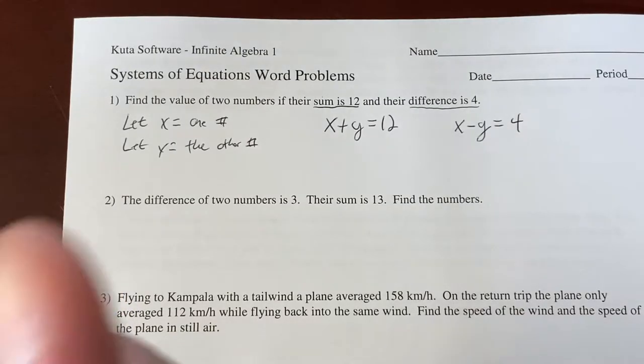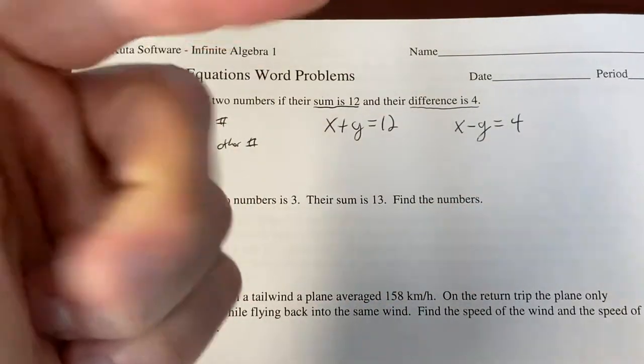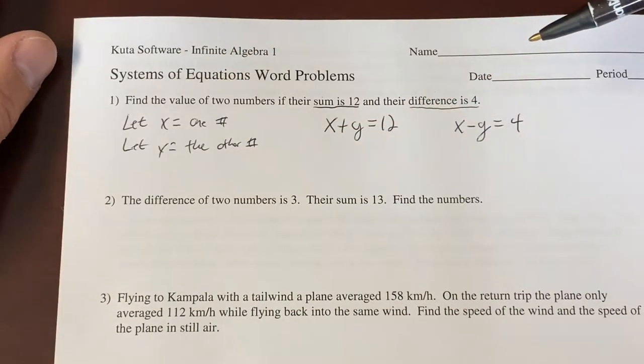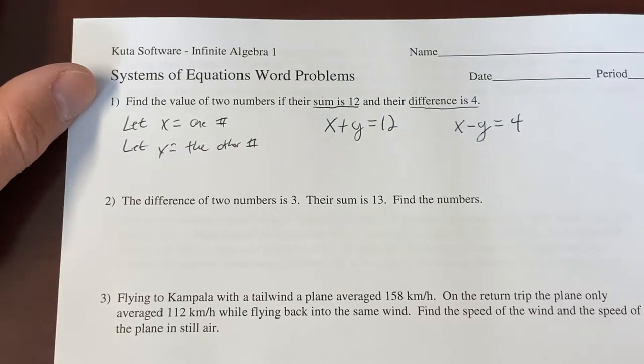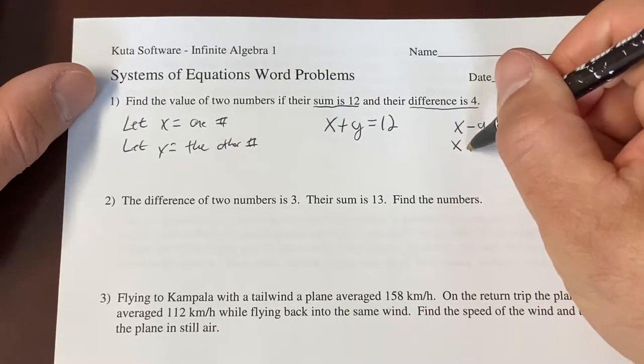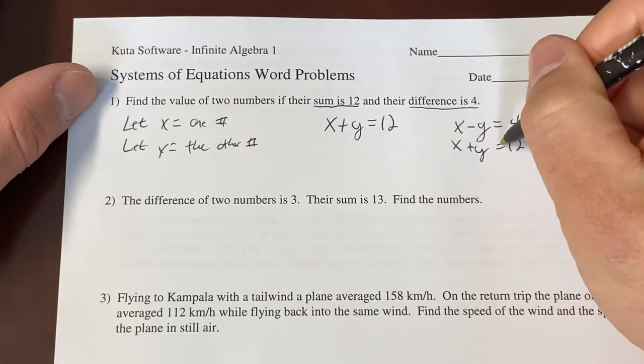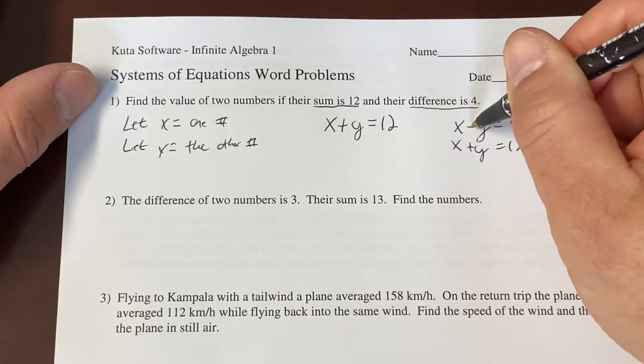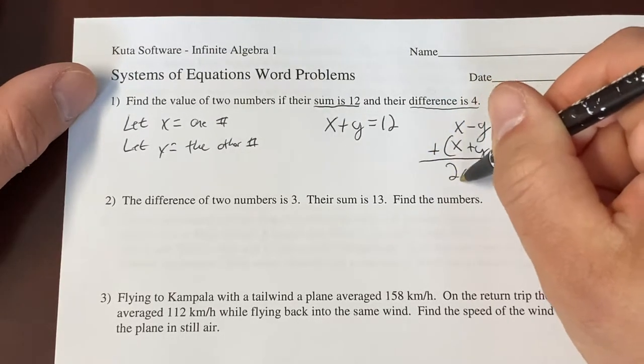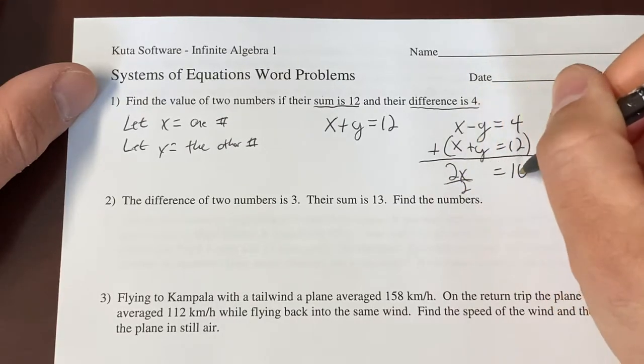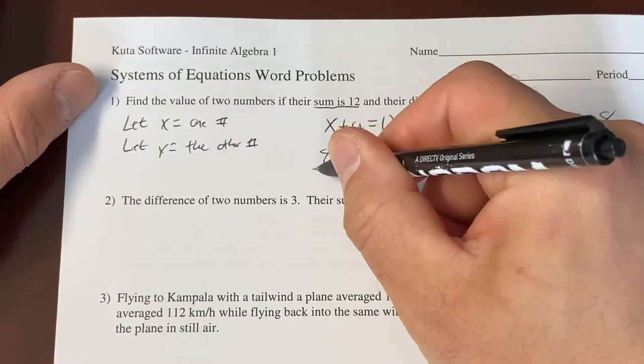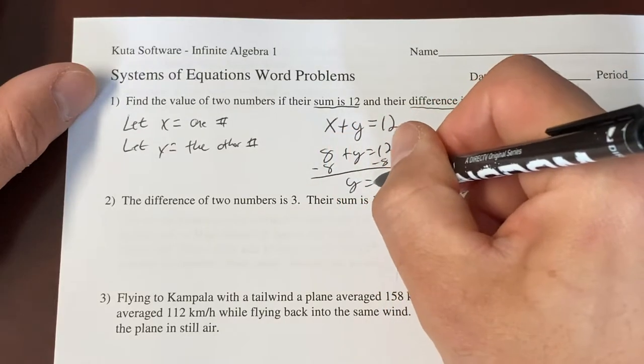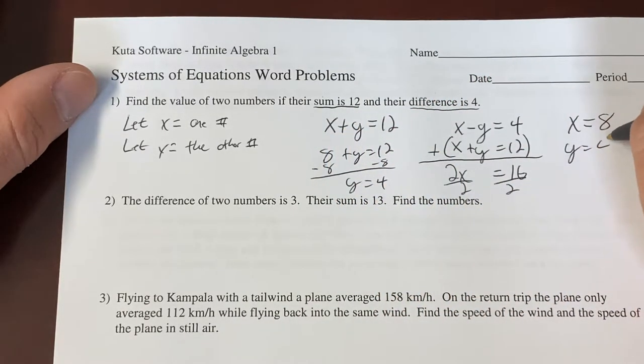Now we solve our system. We could graph, we could substitute, we could eliminate. This system right here is set up very nicely to eliminate, because both my x's and y's in both equations have the same coefficient. So I'm just going to go ahead and write this guy right underneath. x plus y equals 12. All I did was rewrite that guy over here, and now I'm going to eliminate by adding, because negative y plus y gives me 0. That will give me that 2x equals 16. Divide by the 2. x equals 8. 8 plus what number is going to give me 12? Well, subtract 8 from both sides, and I will figure out that that number is 4. y equals 4. Final answer, 8 comma 4. There you have it.